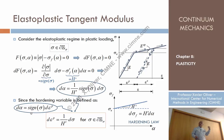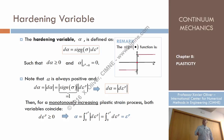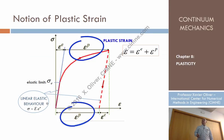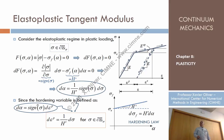We recall the definition of the hardening variable. We define the hardening variable as: the differential of alpha is the sign of sigma times the differential of plastic strain. So we replace this equation in here, and by combining these two we can simplify by the sign of sigma, and we obtain the following: the increment of plastic strain is 1 over H prime times the differential of sigma, whenever the stress is at the boundary of the yield domain, that is, at the yield surface.